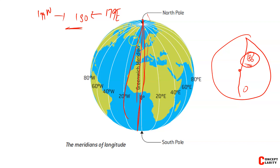We call 180 degrees the International Date Line. So remember: 180 degrees is also called the International Date Line, and 0 degrees is the Prime Meridian.